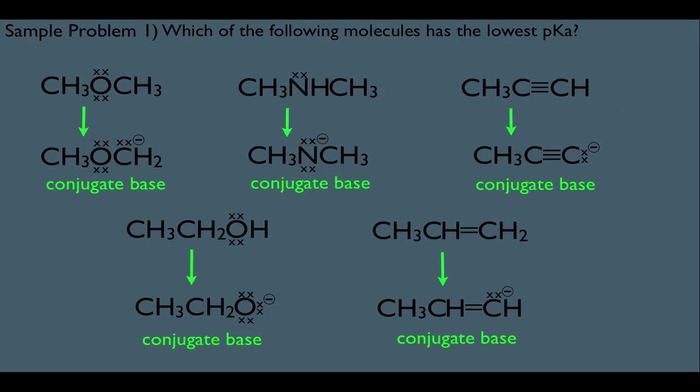Here's what I mean. Look at this conjugate base right here. We have electrons sitting on top of a carbon, and that carbon happens to be sp hybridized. And look at this conjugate base over here, kind of the same thing, we got electrons on a carbon, but this time the carbon is sp2 hybridized.